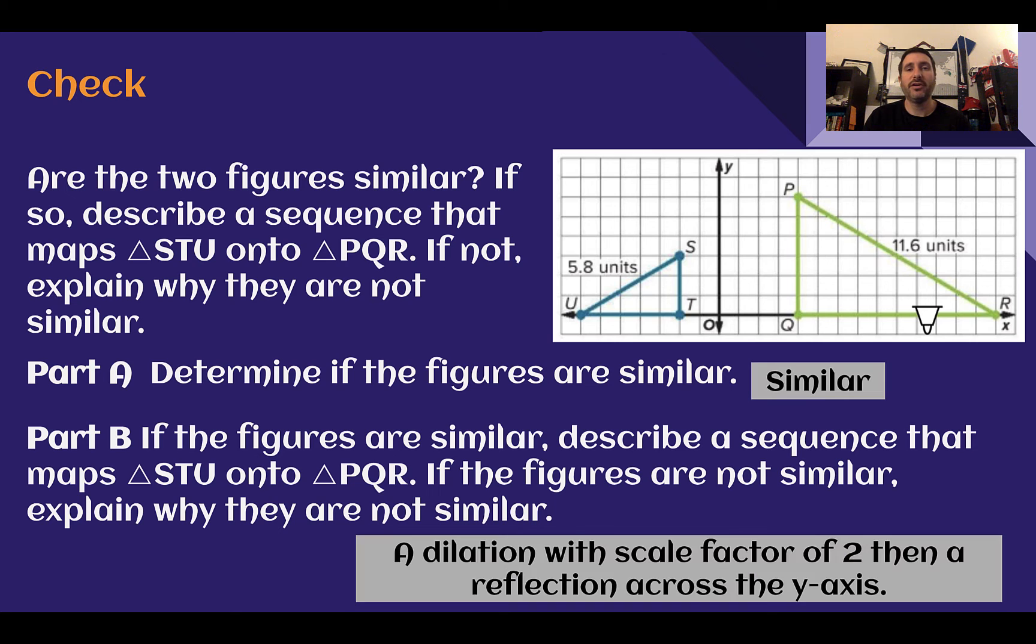Check your answer. First, yes, they are similar. We should check. This side would correspond to this side. 3 compared to 6, it's twice as much. 5.8 times 2 is 11.6, also twice as much. 5 compared to 10. So everything in my final image would be twice as much as my pre-image. It was a scale factor of 2. Please make sure you are checking all the sides.